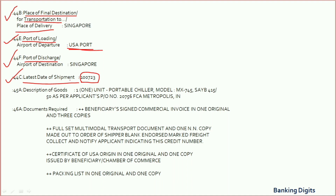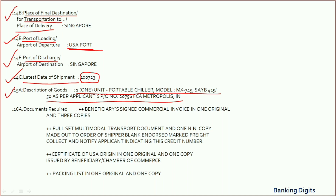Field 45A refers to the description of goods, which needs to be mentioned on the invoice. The invoice does not require the goods description to be mentioned as a mirror image; however, all the wording from this field should be available somewhere in the invoice. When read together across all places, we should be able to find that all the words mentioned in Field 45A are present.